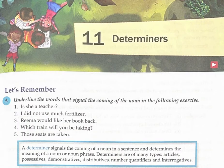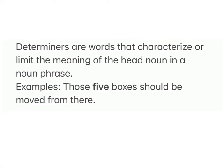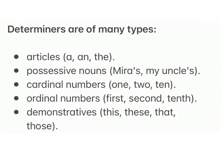Lesson 11: Determiners. Determiners are words that characterize or limit the meaning of the head noun in a noun phrase. Example: 'Those five boxes should be moved from there.' Determiners are of many types: articles (a, the), possessive nouns.